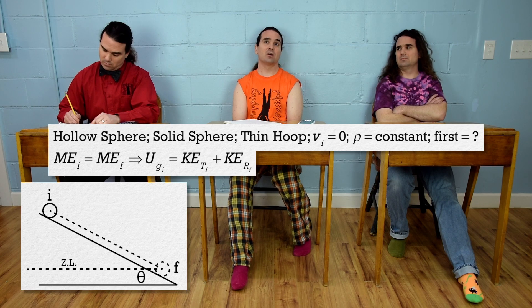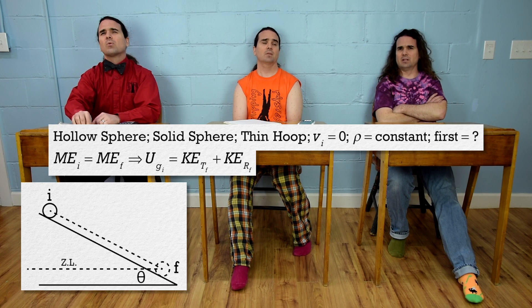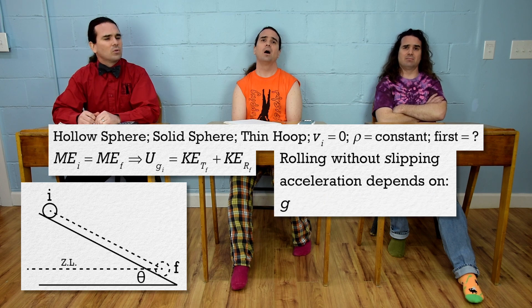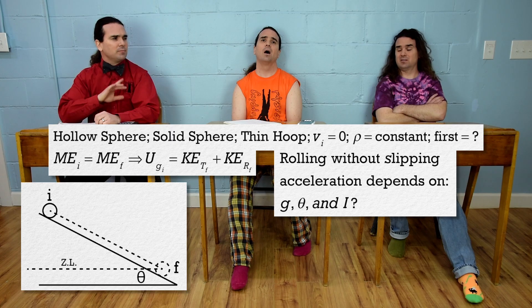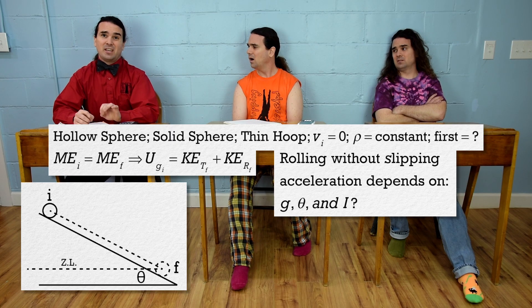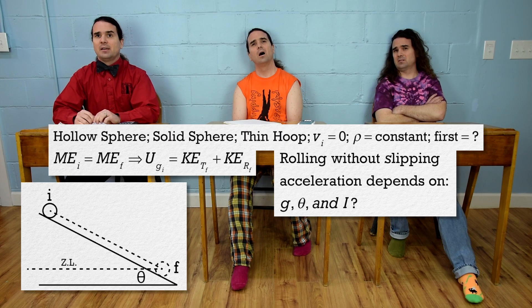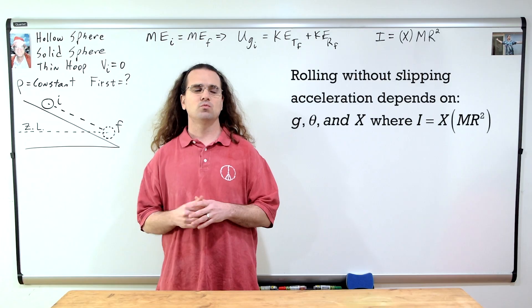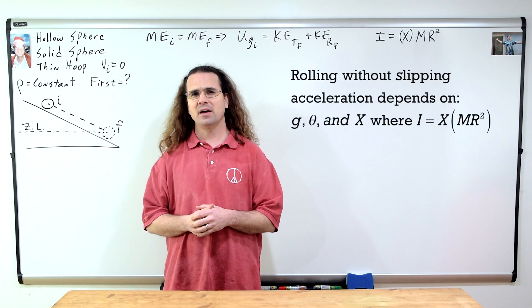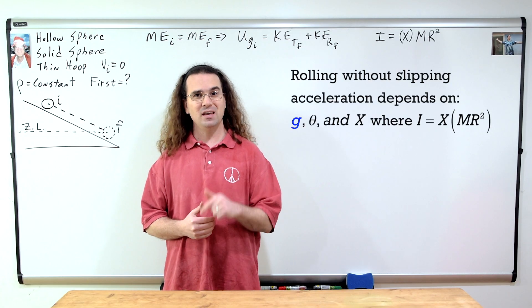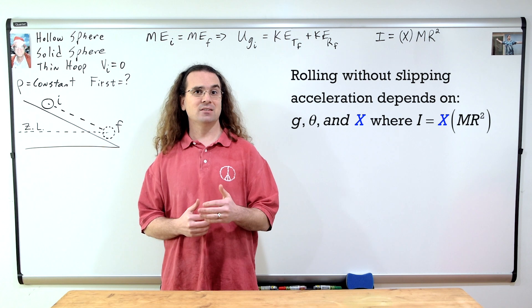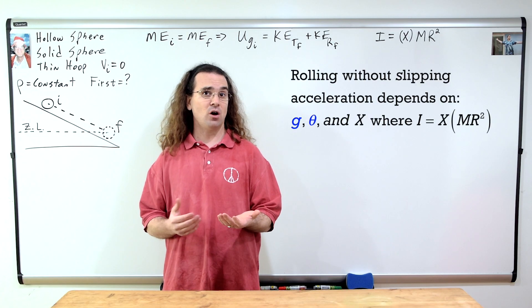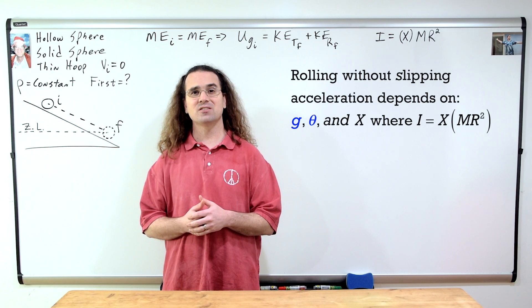Although they have both translational and rotational final kinetic energies. The acceleration of those objects rolling without slipping down the incline only depends on acceleration due to gravity, incline angle, and the fraction x in front of the mass times radius squared equation for the rotational inertia of each object. The acceleration due to gravity and incline angle are the same for all three objects, so the only variable which is different for each object is the fraction x.